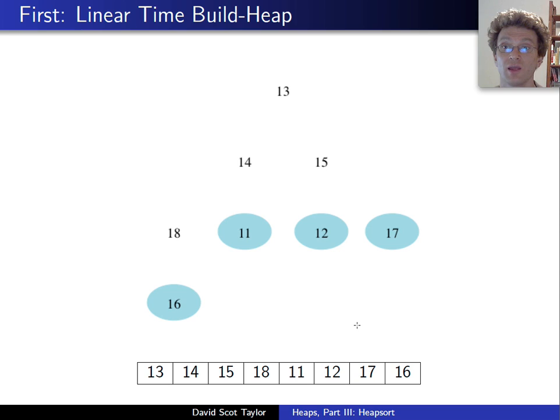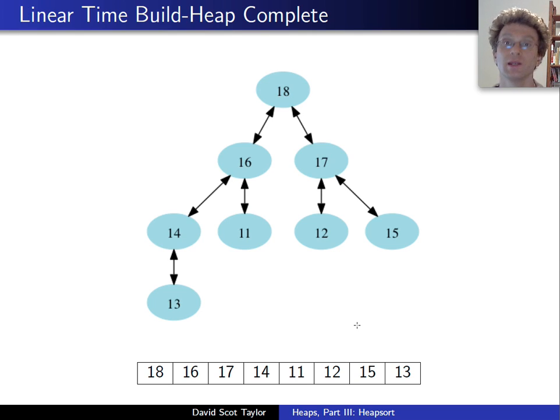First thing I'm going to do is I'm going to run the linear time build heap. So this is the same array that I used in the part 2 of the heap video. So in linear time, we have our heap built. And now what I'm going to do is just iteratively delete the max value.